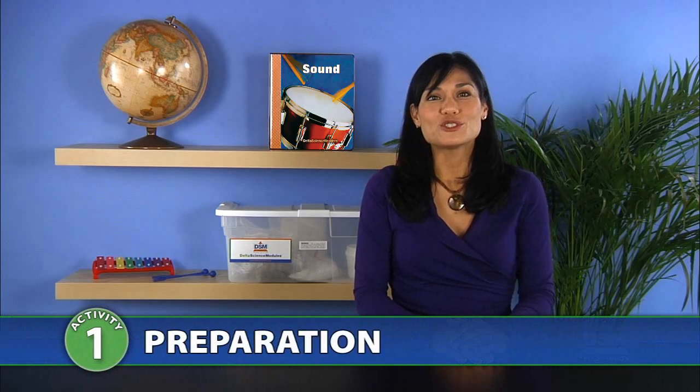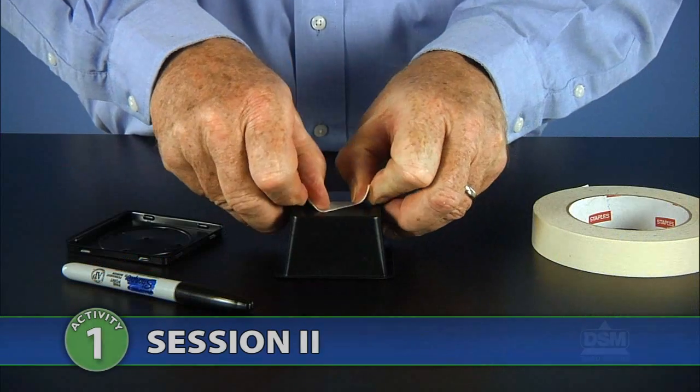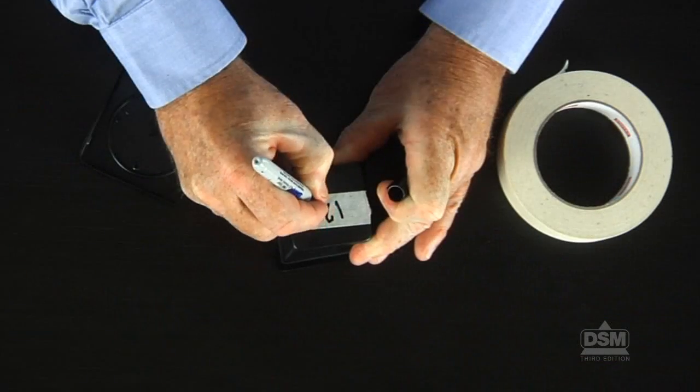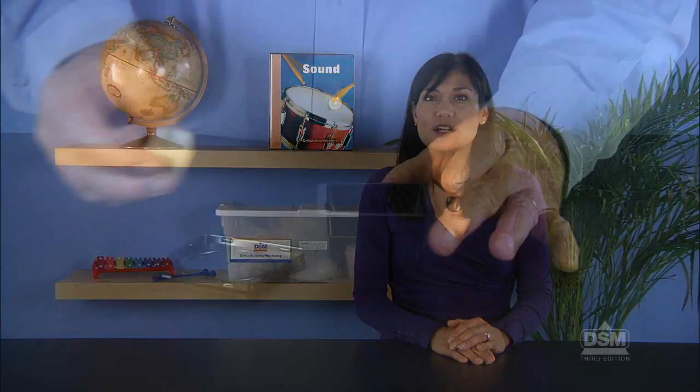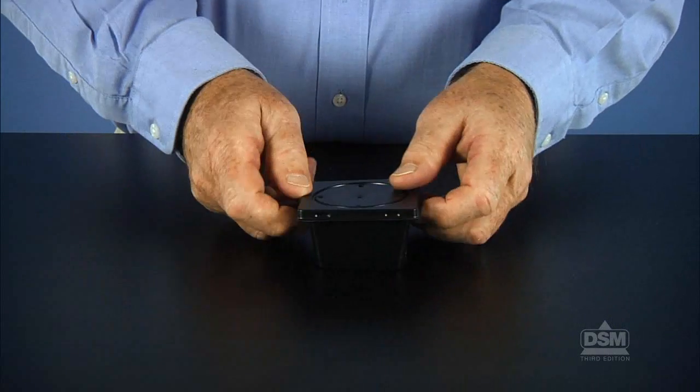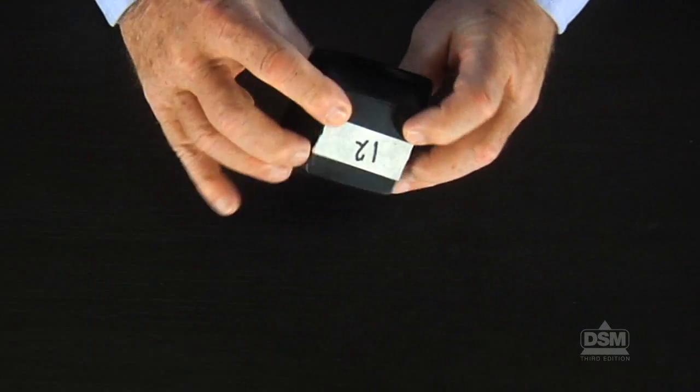To prepare for Session 2, use masking tape to label the sound boxes 1 through 16. Make 8 pairs of sound boxes, placing one object in each box according to the following list, and fasten the lid securely.